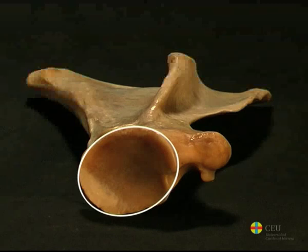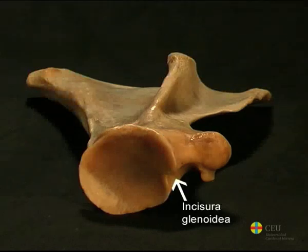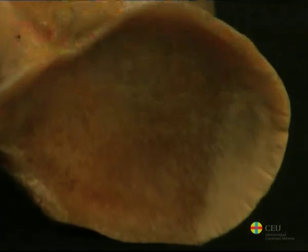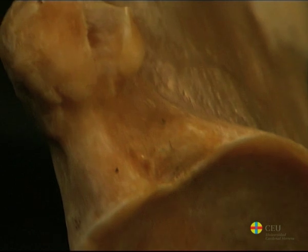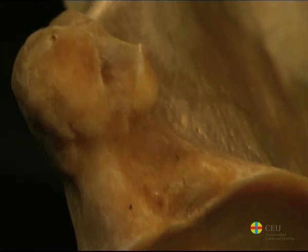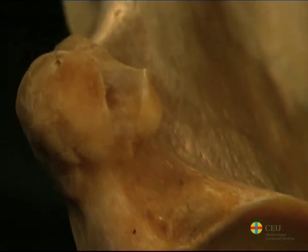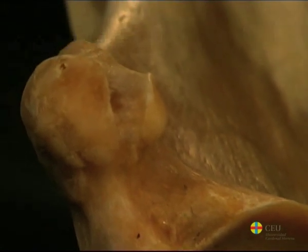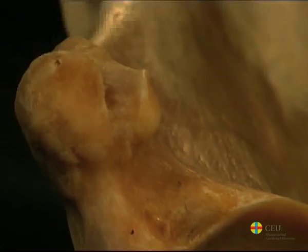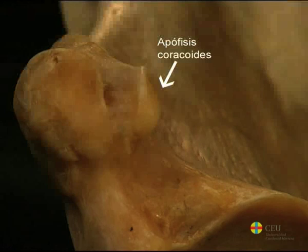The glenoid notch is located in the cranial portion of the glenoid cavity. Dorsally to the cavity is the supraglenoid tubercle, where the tendon of the origin of the biceps brachii muscle joins, and the coracoid process, where the small coracobrachial muscle originates.